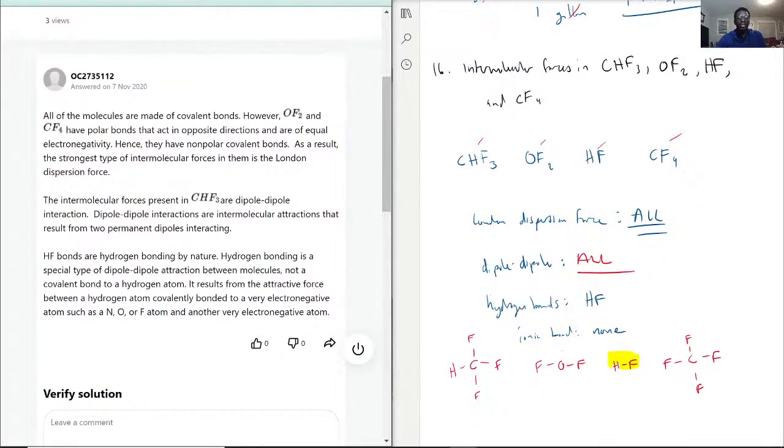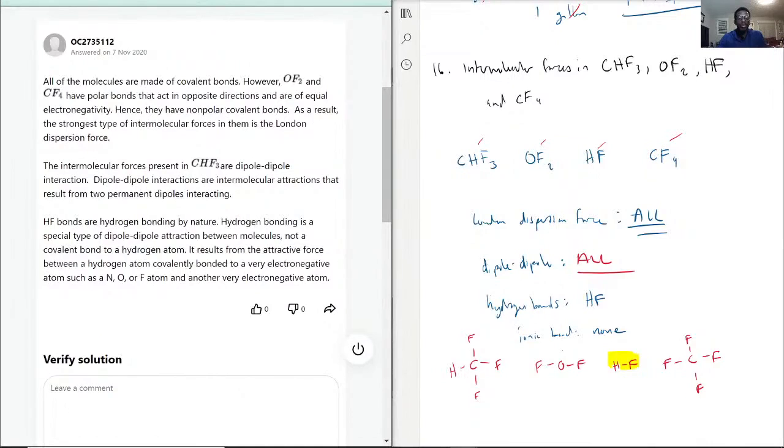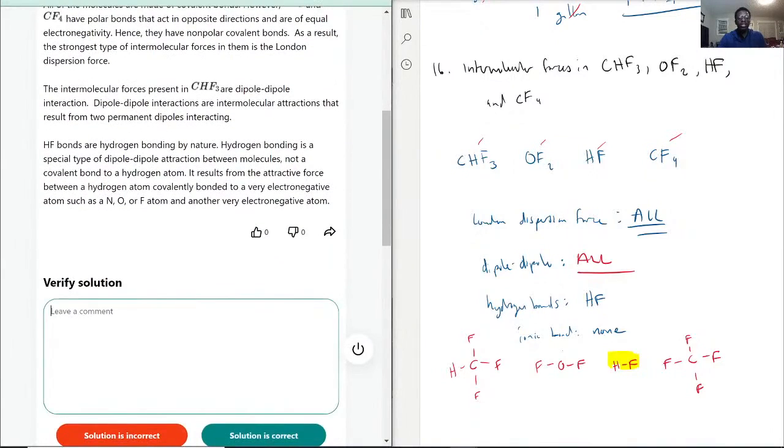All the molecules are made of covalent bonds, I agree with that. The intermolecular force present in CHF3 is dipole-dipole interaction, which is true. HF bonds are hydrogen bonds by nature, also true. This is partially correct. They are still polar bonds, it's just a non-polar molecule.